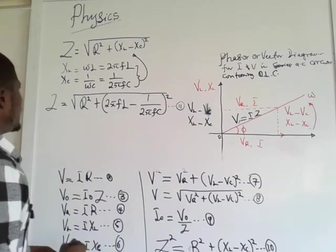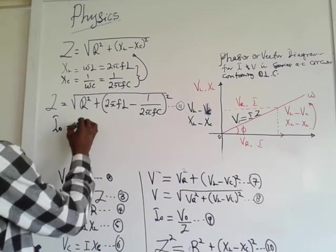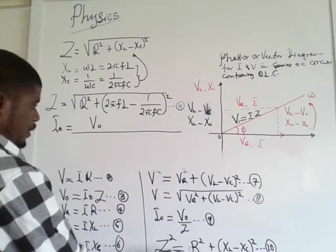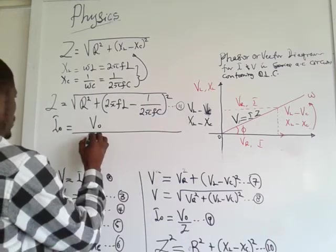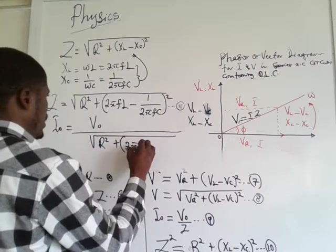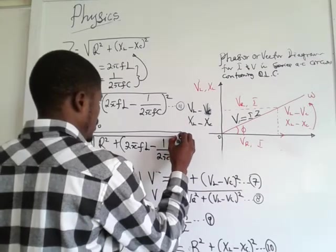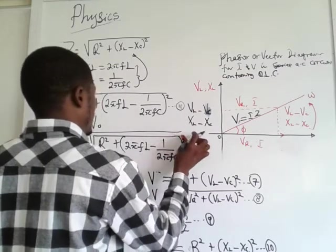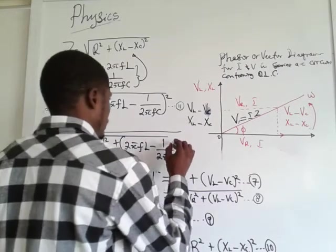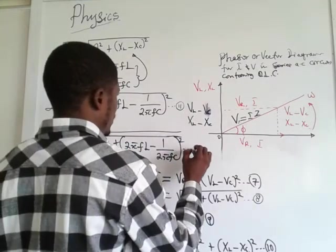That is the impedance in the circuit. So we can write that the peak current flowing through the circuit — equation twelve — is: I₀ = V₀ / √(R² + (2πfL − 1/(2πfC))²).